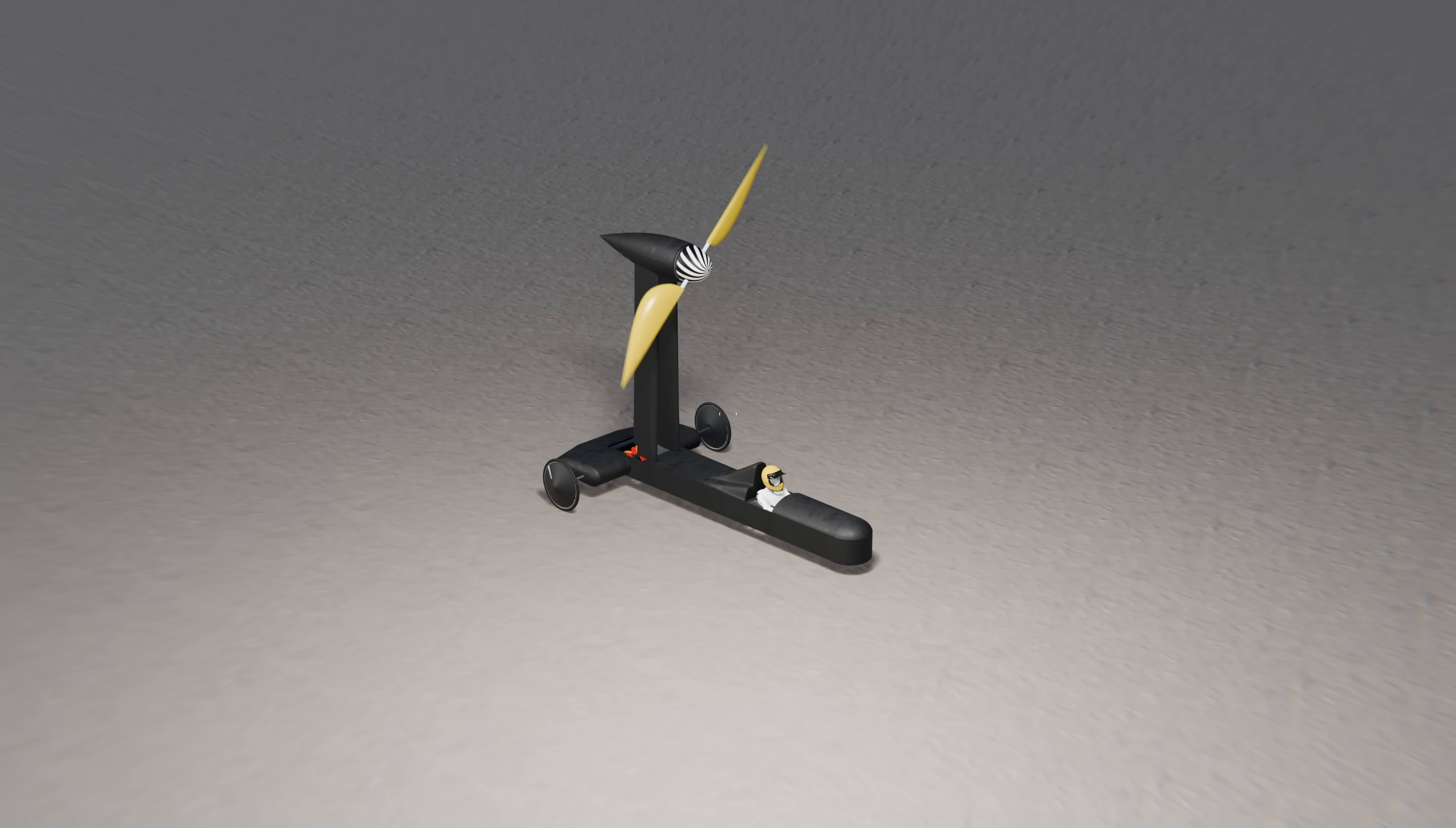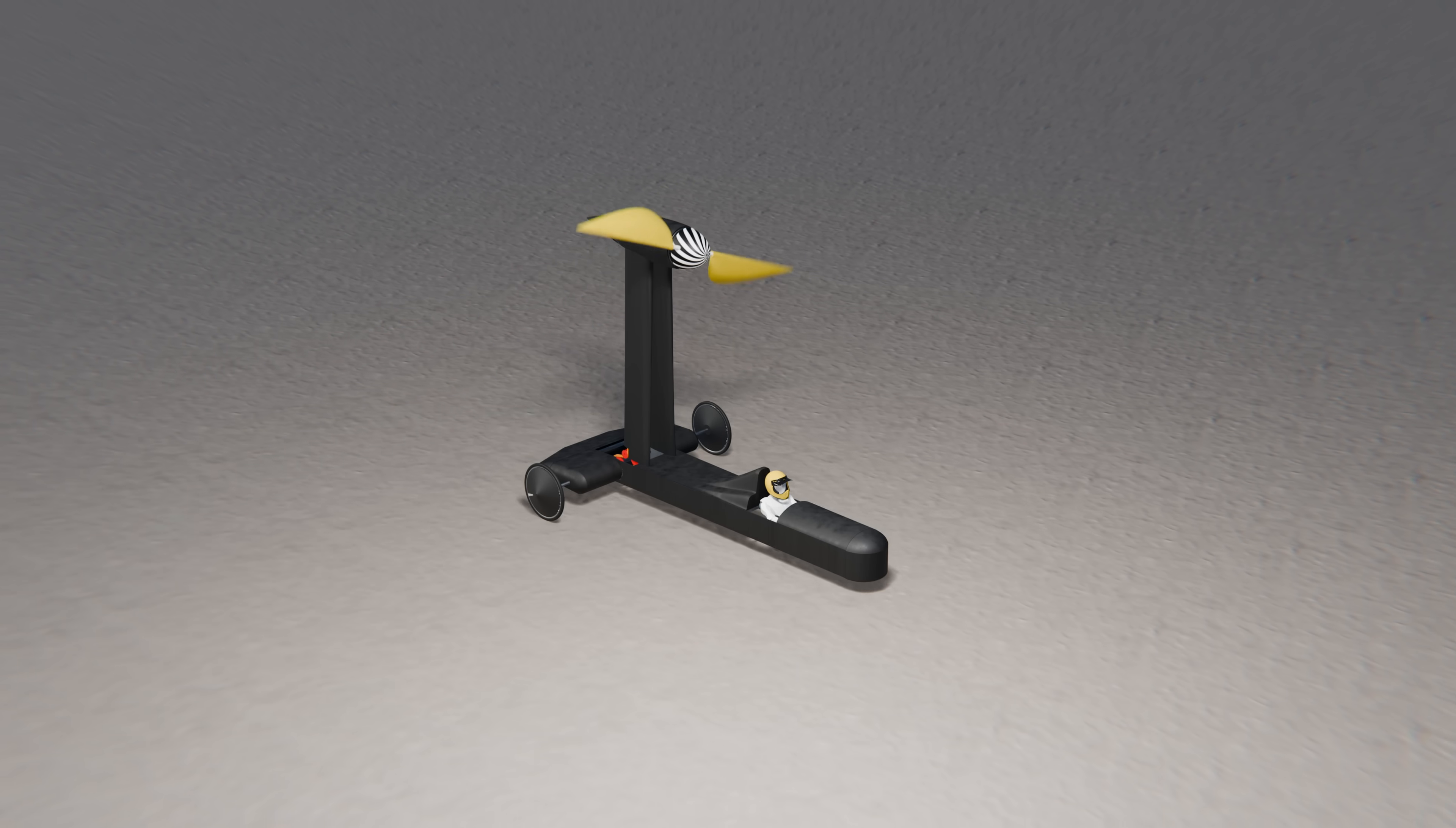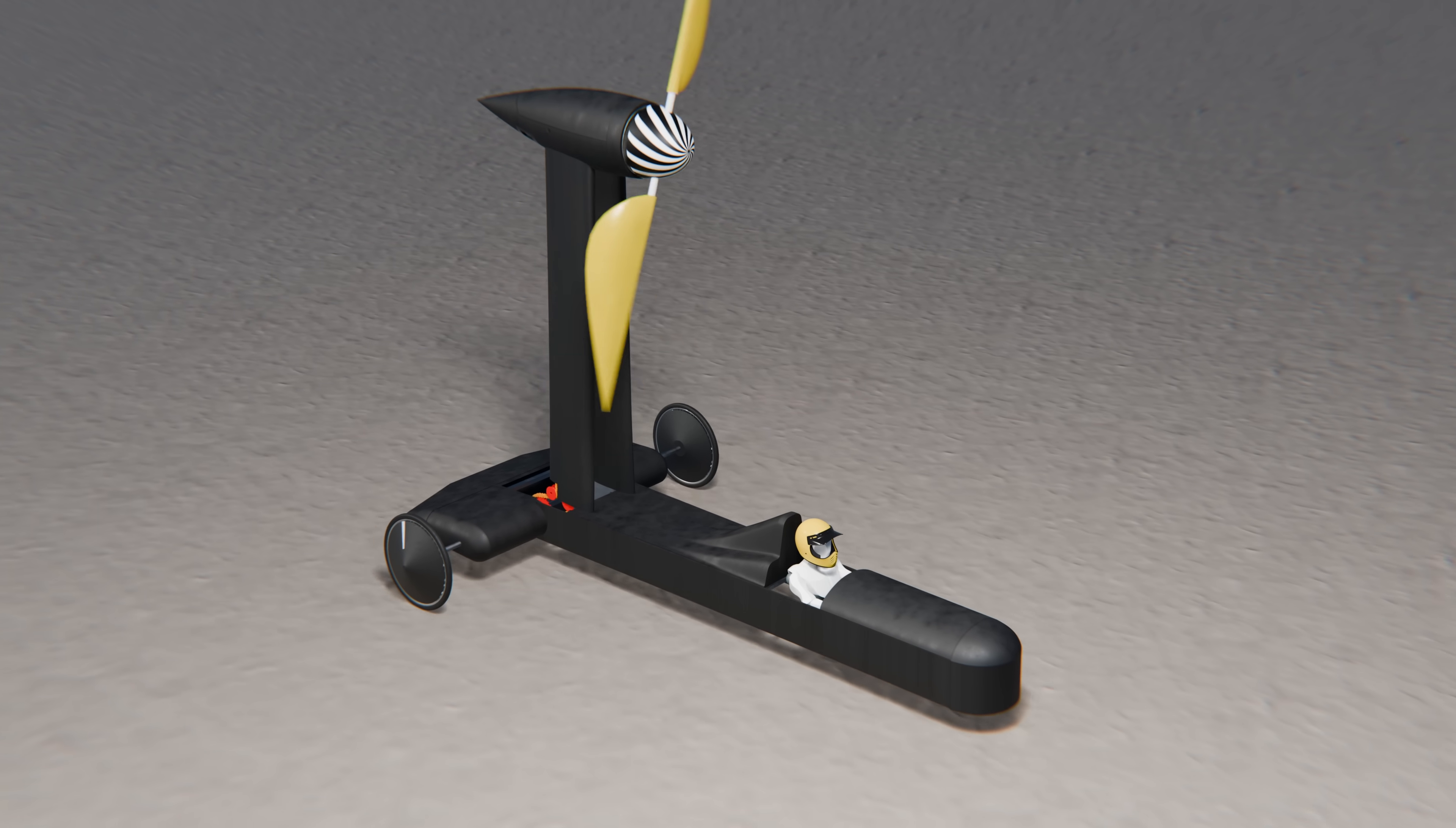The Blackbird, created by Rick Cavallero and his team, uses a propeller mechanically linked to its wheels to accelerate faster than the wind pushing it. On paper and in real-world tests, it works. But online, it sparked chaos. Why did it divide the physics community?